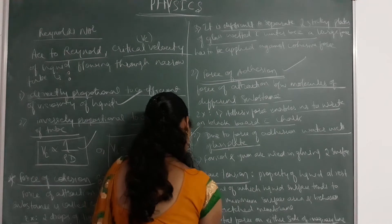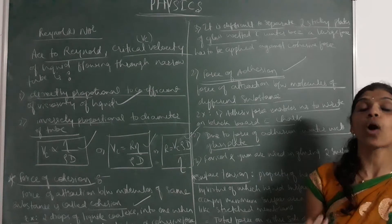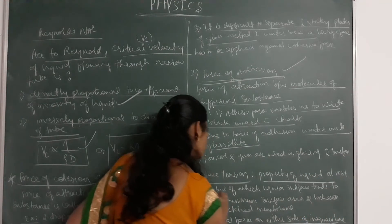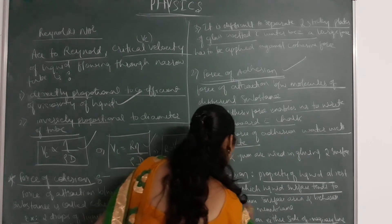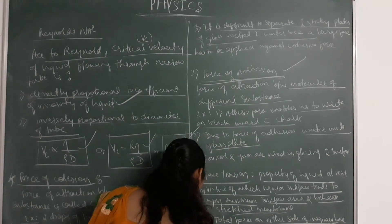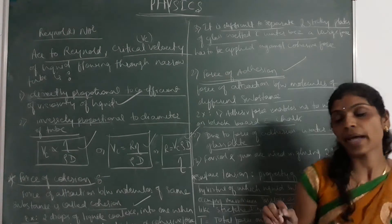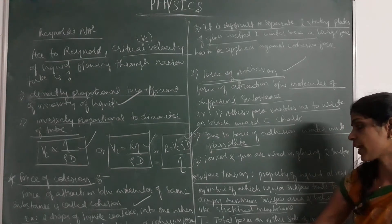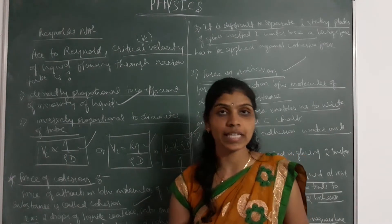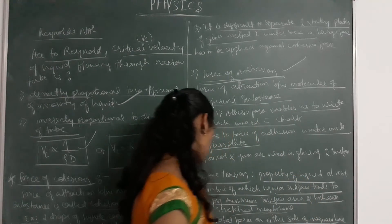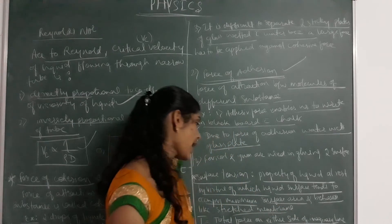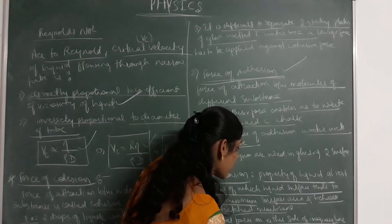Next, the basic definition of surface tension. Surface tension is a property of liquid at rest by virtue of which the liquid surface tends to occupy minimum surface area and behaves like a stretched membrane. Surface tension is represented by the formula T equals force divided by L, where F is the total force on either side of the imaginary line and L is the length of the line. The SI unit used to measure surface tension is Newton per meter or dynes per centimeter. The dimensional formula is M L⁰ T⁻².